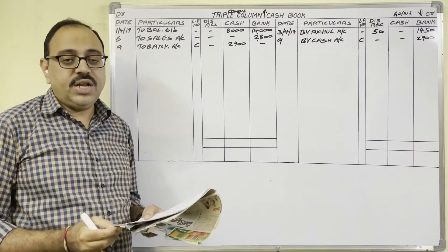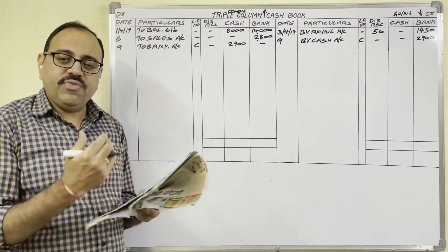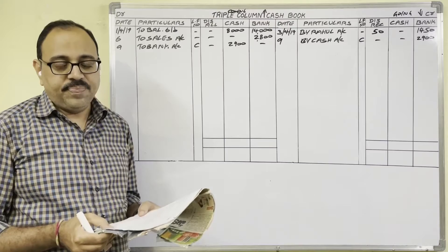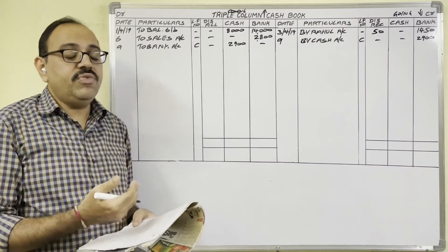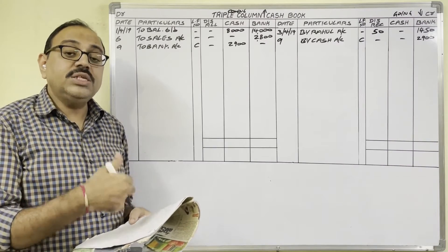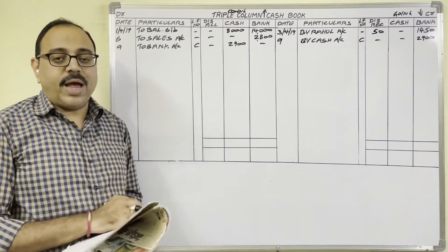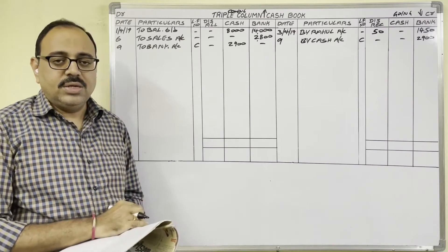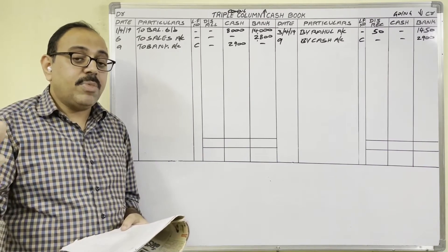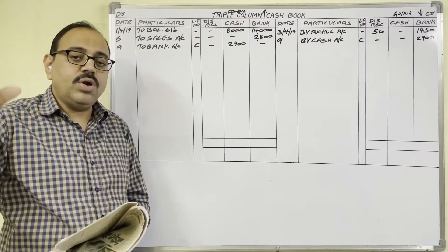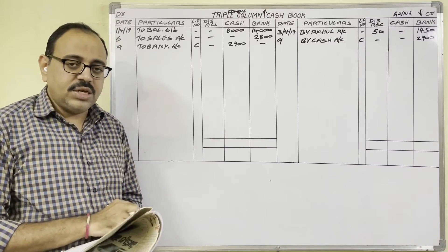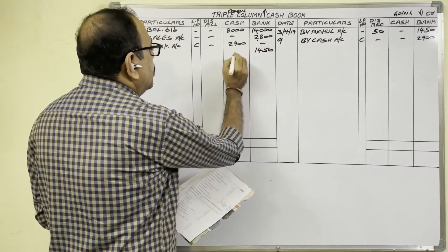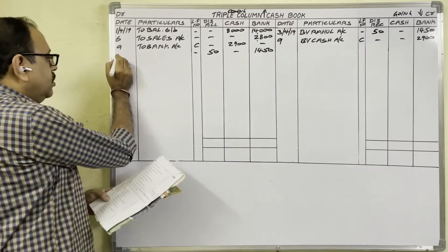11th April: Received a check from Raju — 1,450 rupees in full settlement. Instead of receiving 1,500, only 1,450 is received as full settlement, so 50 rupees is discount allowed. The check was received and deposited into the bank on the same day — our assumption is the bank collected from his bank and credited to our account on the same day. Bank balance is increasing, so on the debit side bank column we write: 11th date, To Raju Account, check value 1,450, discount 50 rupees in the discount allowed column.